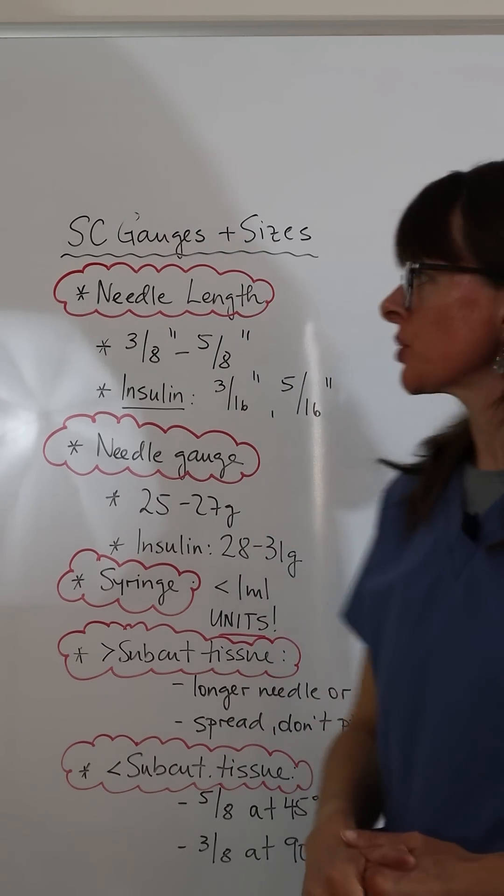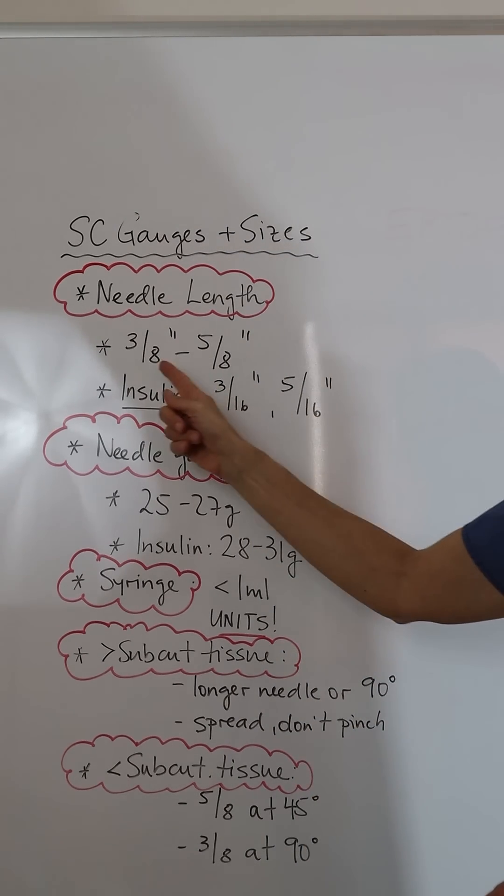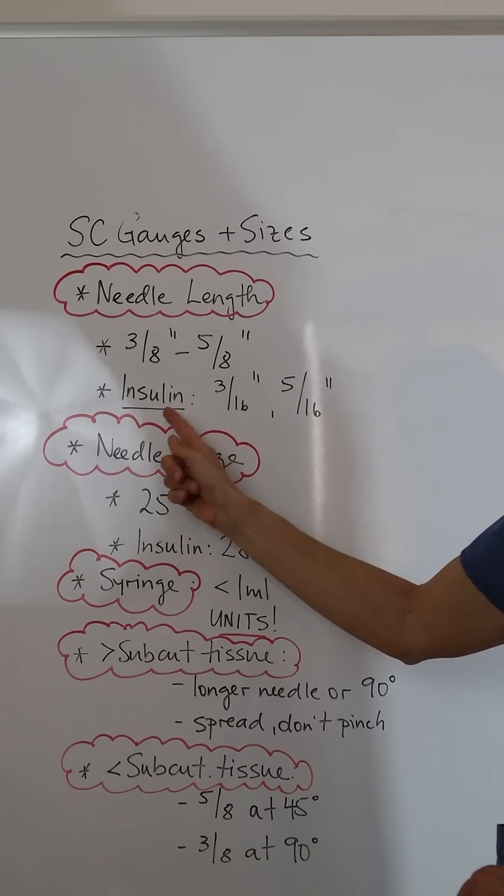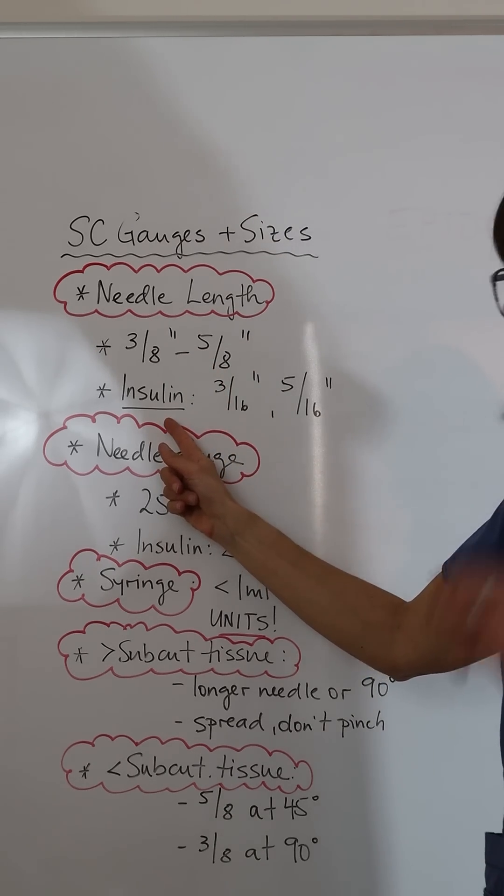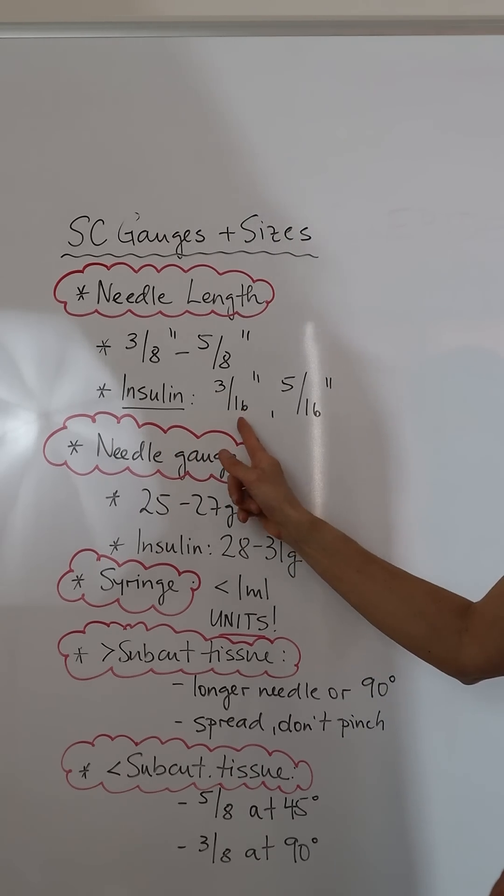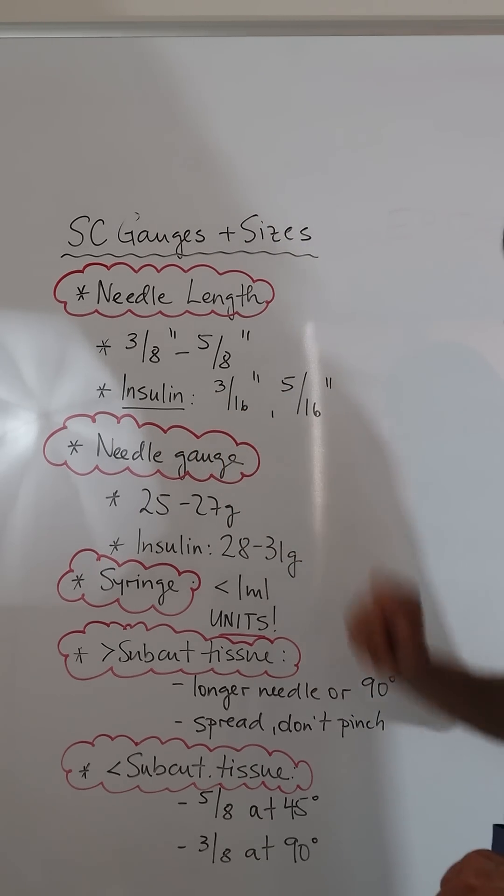For subcutaneous injections the needle length is usually three eighths to five eighths of an inch, but for insulin syringes they are even shorter, three sixteenths or five sixteenths of an inch.